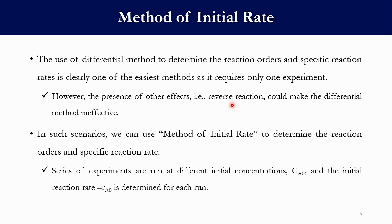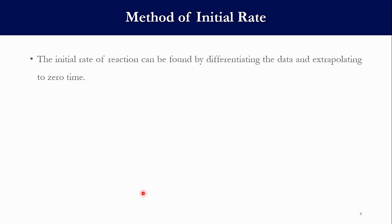In the method of initial rate to determine the different values, we have to perform a series of different experiments which are run at different initial concentrations Ca0 and initial rate of reaction -Ra0, and then we have to compute the values of rate parameters. The initial rate of reaction can be found out by differentiating the data and extrapolating to zero time.